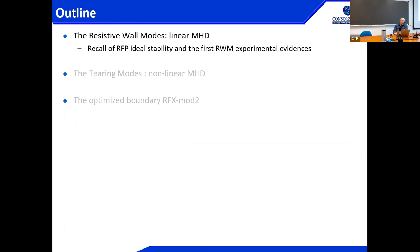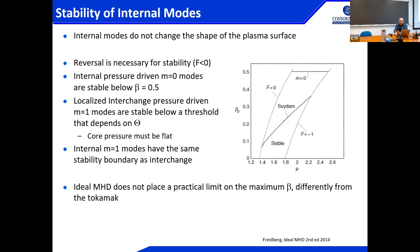Resistive wall modes are described in the realm of linear MHD — the realm of engineers — who use all their machinery to deal with power supplies, but basically they are linear, which simplifies a lot of things. We start with a recall of RFP ideal stability. Ideal MHD stability of the RFP is hidden in very old papers, full of analytics, but Freidberg in his last version of his ideal MHD book summarized it with some simplifications. In summary, the stability of ideal MHD modes in a given RFP configuration can be summarized in a theta-beta diagram.